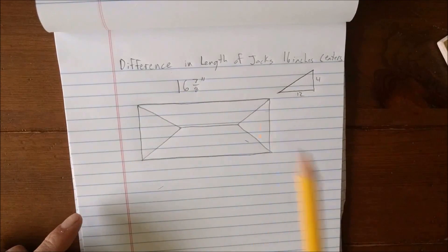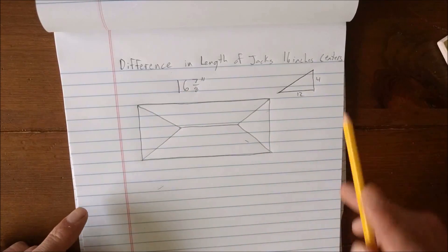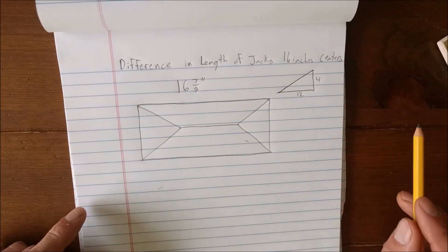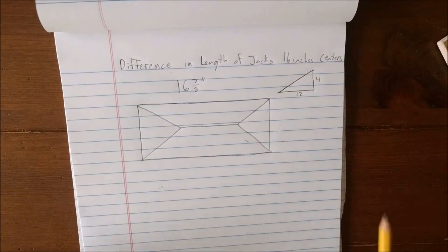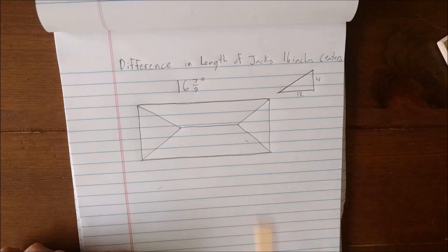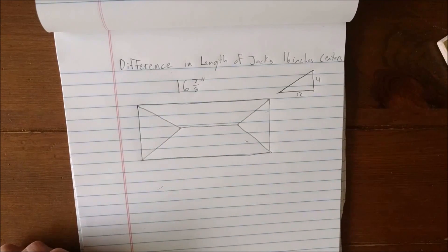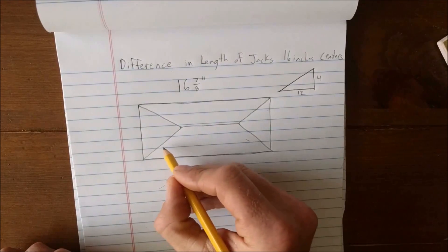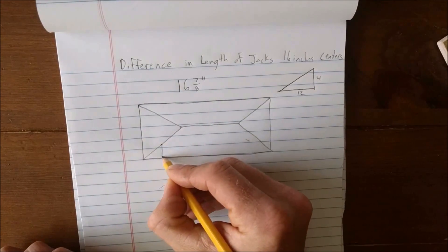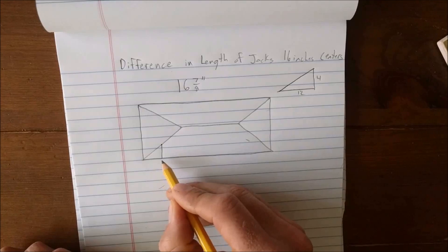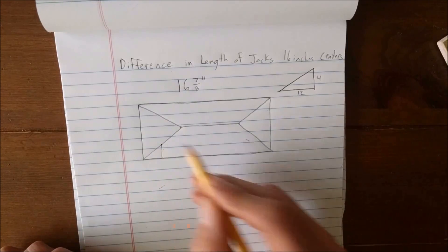We'll now look at the difference in length of jacks with 16 inch centers. We're using a four and twelve pitch roof and here I have the top view or plan view of a hip roof. You know from the framing square that the number we need to match is sixteen and seven eighths inches. When we talk about jacks we're talking about hip jacks, and they're rafters that are going to go from the plates to the hip rafter.